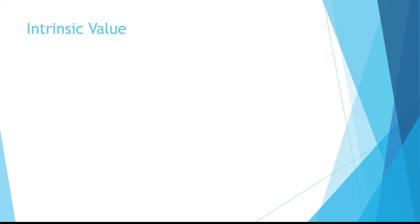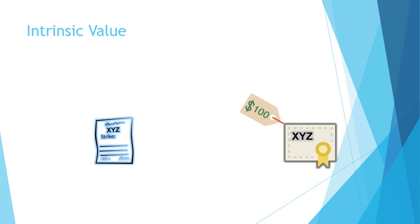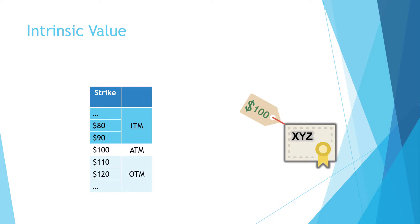Let's first look at intrinsic value through an example. We have stock XYZ currently trading at $100 per share. We look at the option chain for stock XYZ — that's just a table showing all available contracts for the stock. In this example, strikes from 80 to 120 in $10 increments are available. Every strike below the current stock price is in the money (ITM), the strike matching the current price is at the money (ATM), and strikes above are out of the money (OTM). Only in-the-money strikes have intrinsic value, because you can buy shares at a lower price than the current market price.